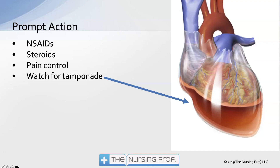We hit inflammation from both sides. Pain control is important — if the patient is having pain, there will be a physiologic response causing an increase in heart rate, which causes more inflammation from the heart rubbing against that inflammatory fluid. Critically, we want to be watching for tamponade. As the fluid fills more of that pericardial space, it could compress the heart enough that the patient is not able to maintain cardiac output.